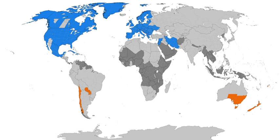Proponents for permanently retaining November as the month for ending DST point to Halloween as a reason to delay the change — to provide extra daylight on October 31. In the past, Australian state jurisdictions not only changed at different local times but sometimes on different dates; for example, in 2008 most DST observing states shifted clocks forward on October 5 but Western Australia shifted on October 26.